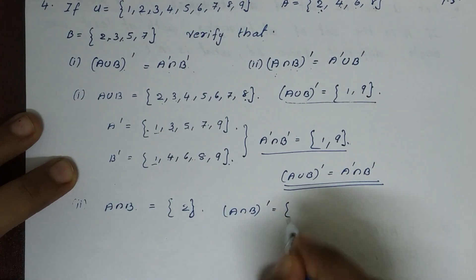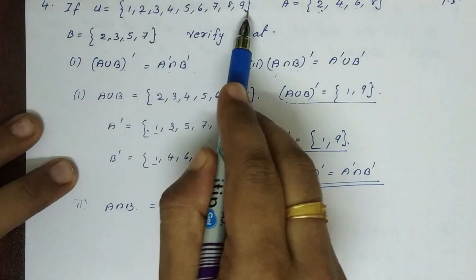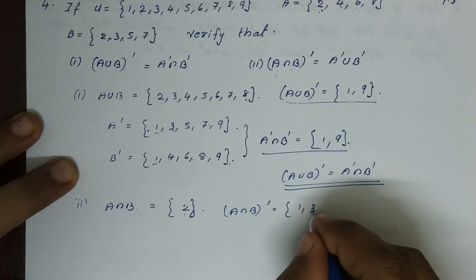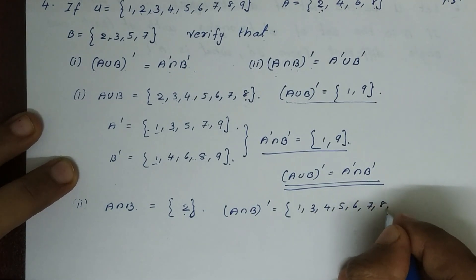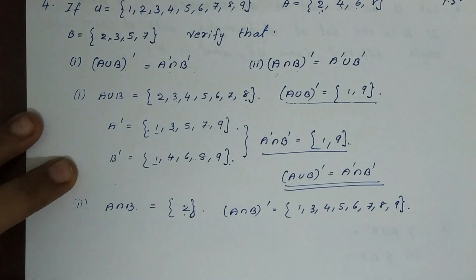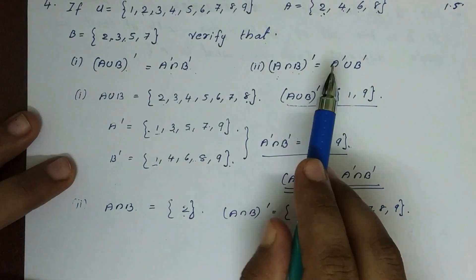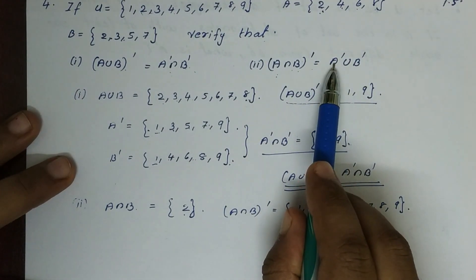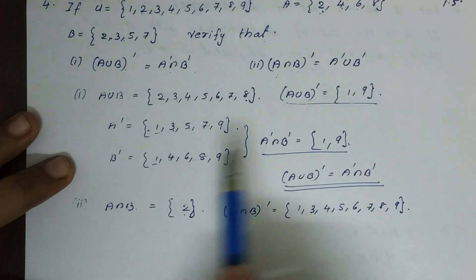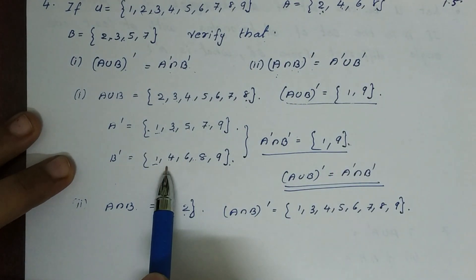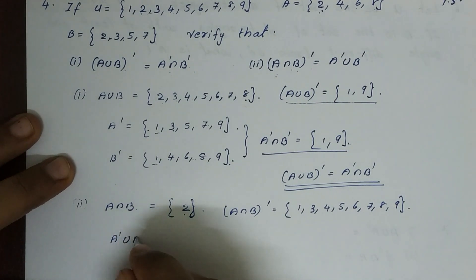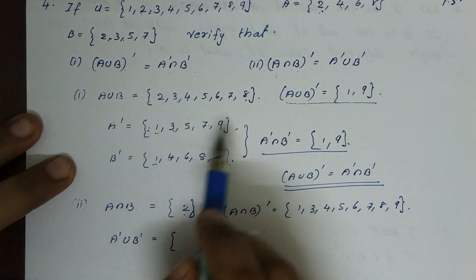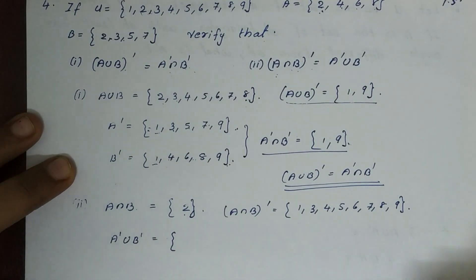Then A intersection B complement has the other elements: 1, 3, 4, 5, 6, 7, 8, 9. Now for A complement union B complement: A complement and B complement are already found, and A complement union B complement combines all their elements.